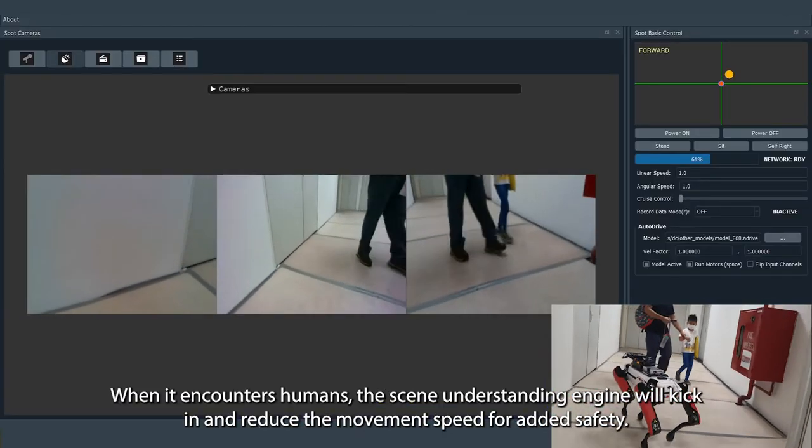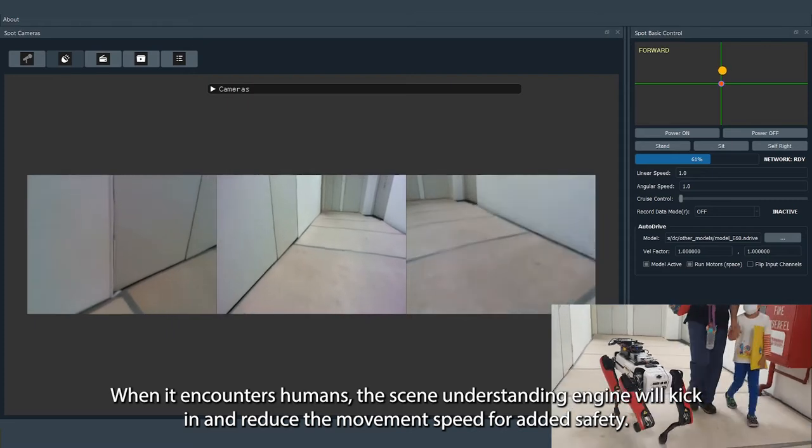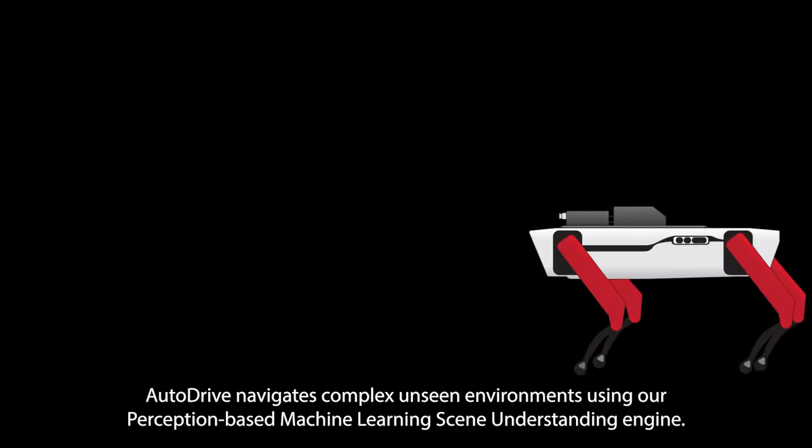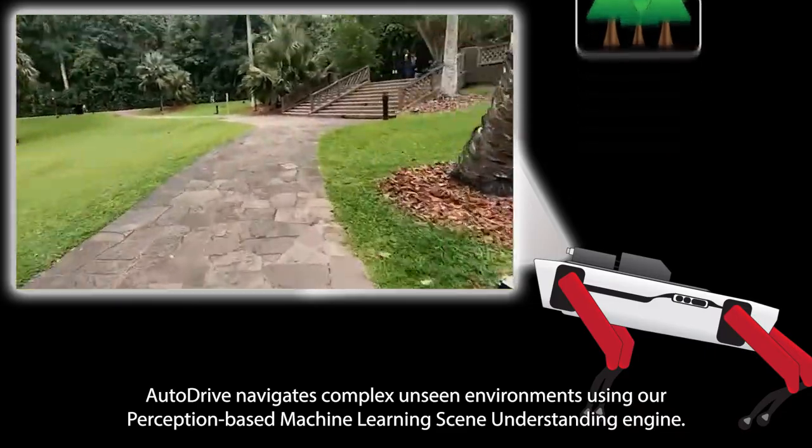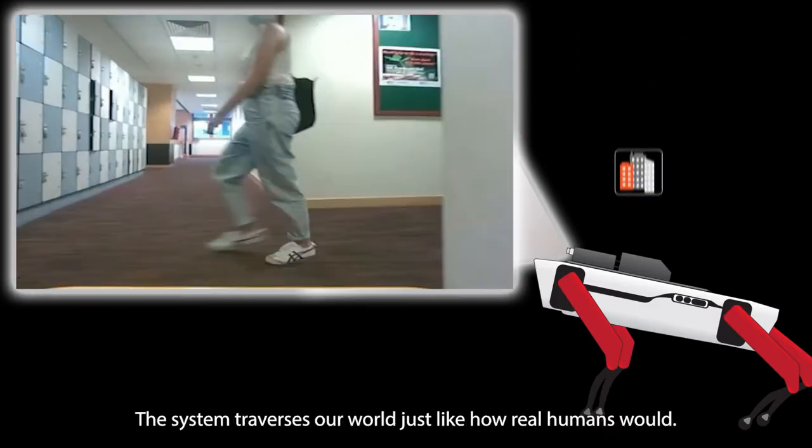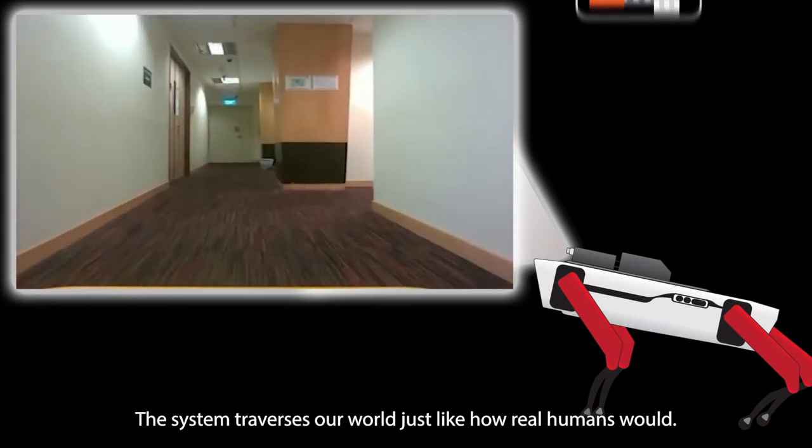When it encounters humans, the scene understanding engine will kick in and reduce the movement speed for added safety. Autodrive navigates complex unseen environments using our perception-based machine learning scene understanding engine. The system traverses our world just like how real humans would.